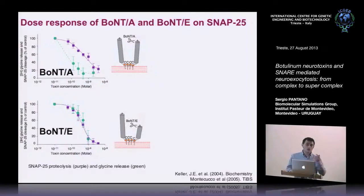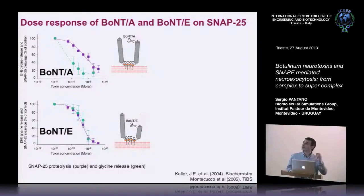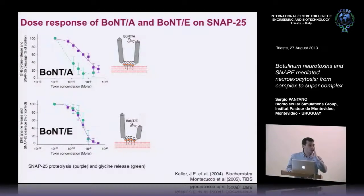This longer duration is what allows for the use of serotype A in cosmetics. When you inject Botox, which is the commercial name of this toxin, you put a toxin that only cleaves locally — not in your brain, but just in your muscles — producing partial paralysis of the muscles near your skin. That's why you look younger: you are not moving part of your facial muscles.